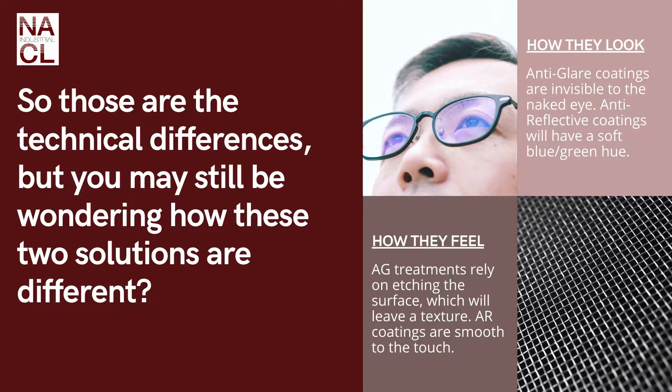Those are the technical differences, but you may still be wondering how these two solutions differ in practice. First, how they look: anti-glare solutions are invisible to the naked eye, while anti-reflective coatings will have a soft blue-green hue. The other way is how they feel: anti-glare treatments rely on etching the surface, which leaves a very fine texture, while AR coatings are smooth to the touch.